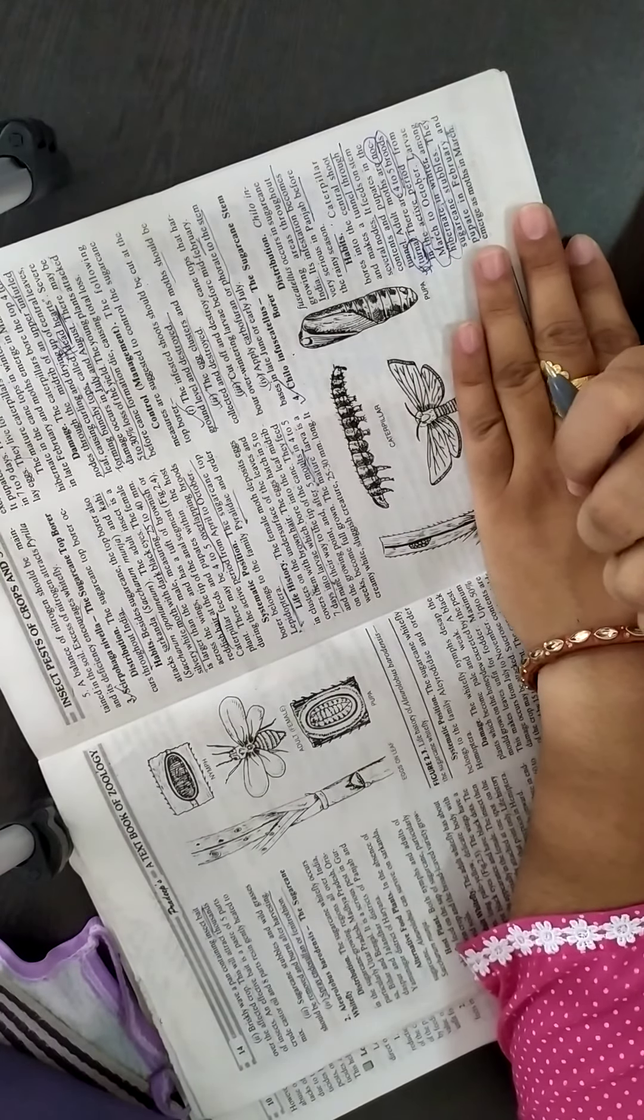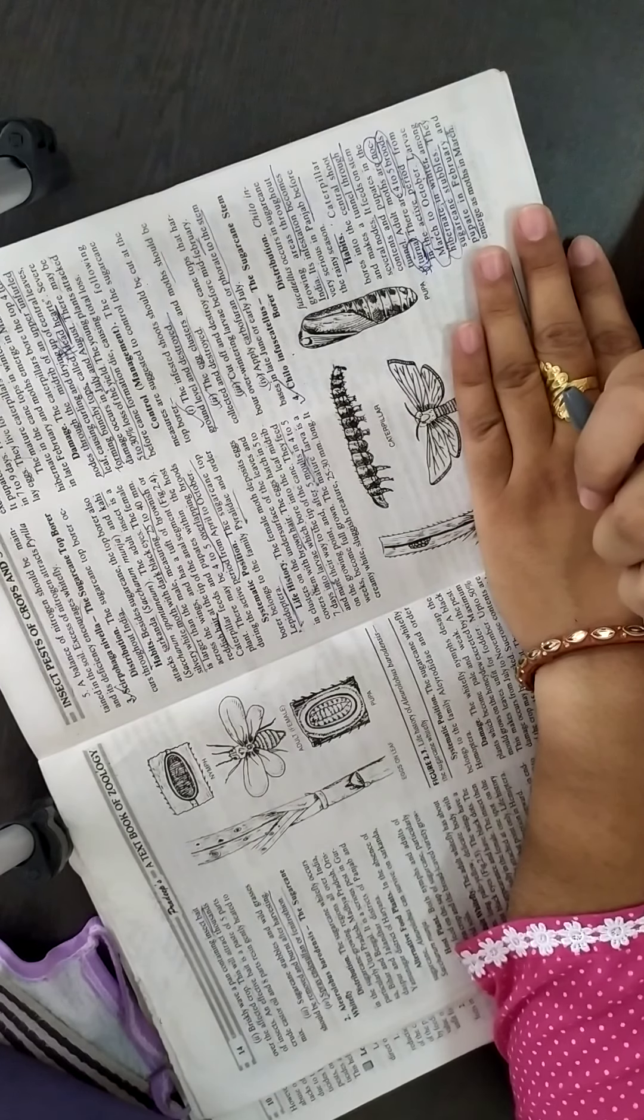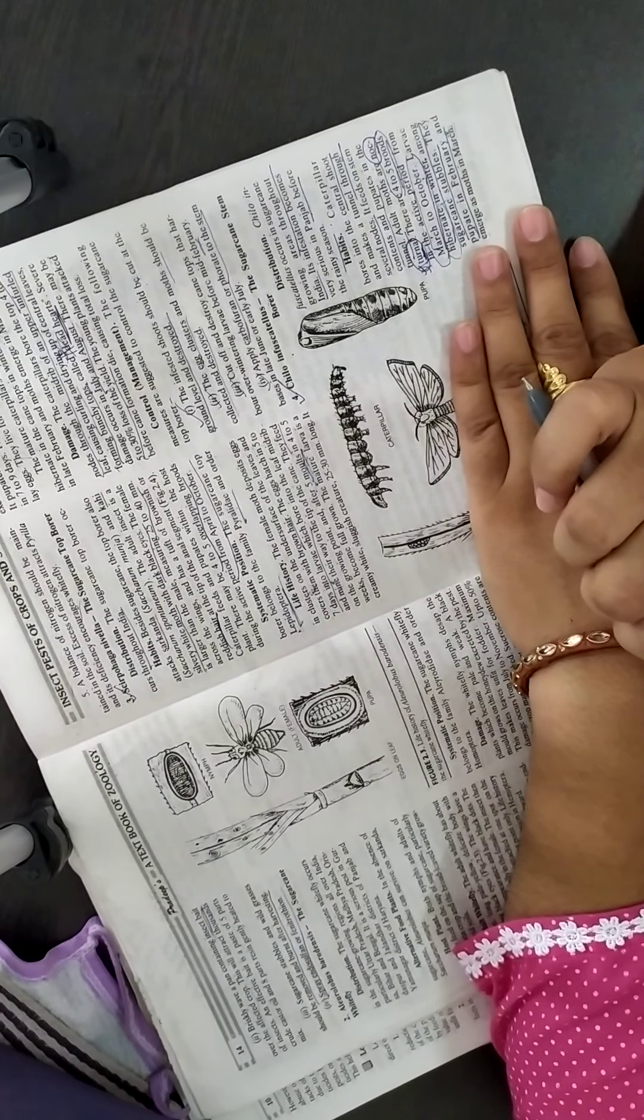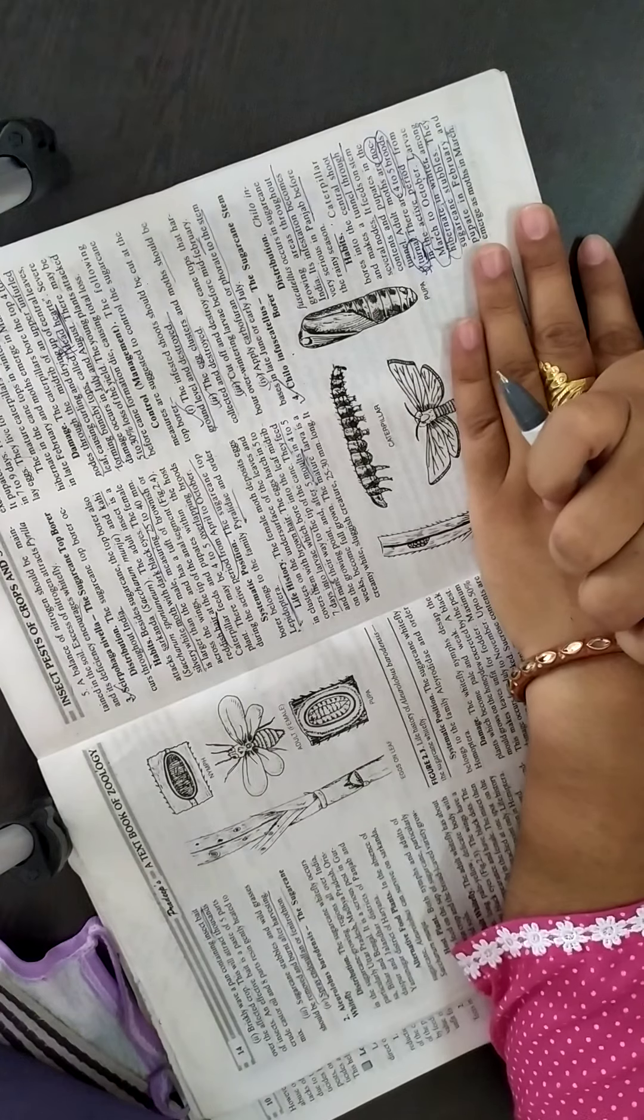Next pest of the sugarcane is the Scripophaga nivella. The common name of this pest is sugarcane top borer.